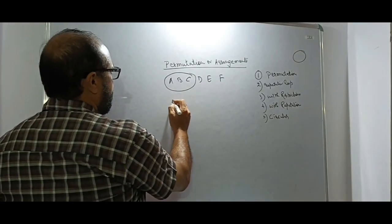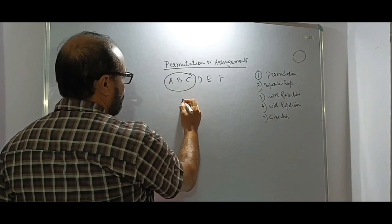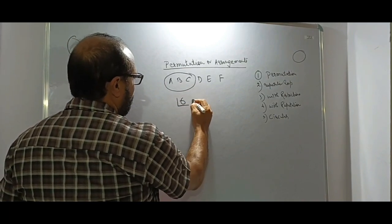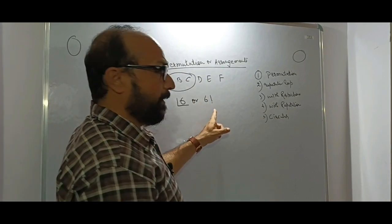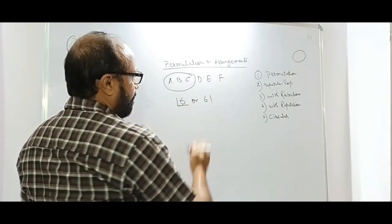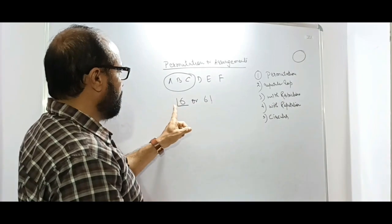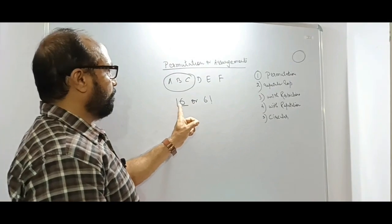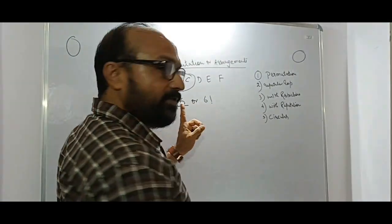There is a simple way to understand it. You have six letters, so we have to take out the factorial — written as '!' in English. This notation and the exclamation mark are both used for factorial. So how do we interpret and solve it?